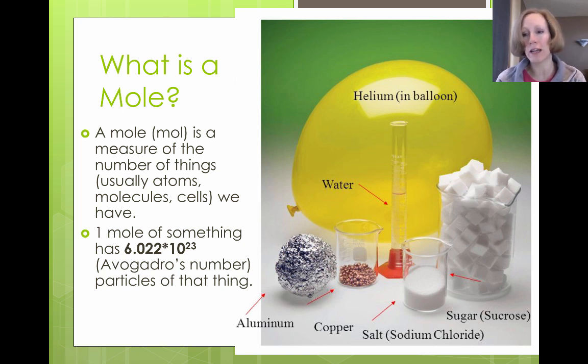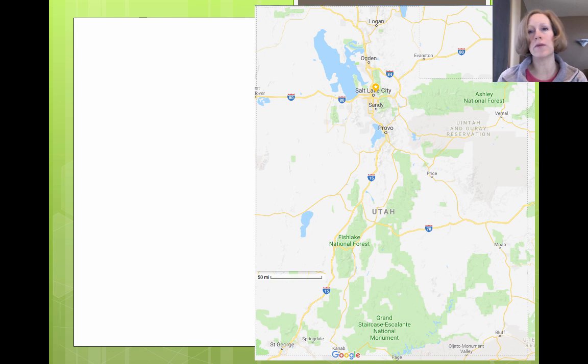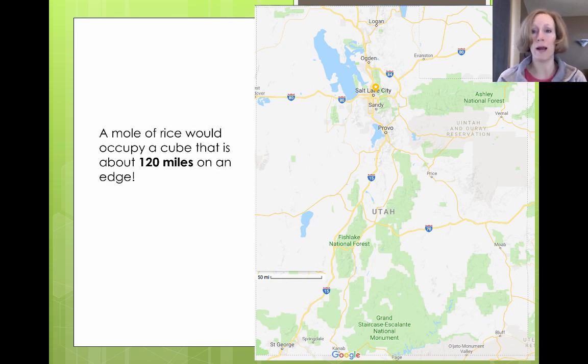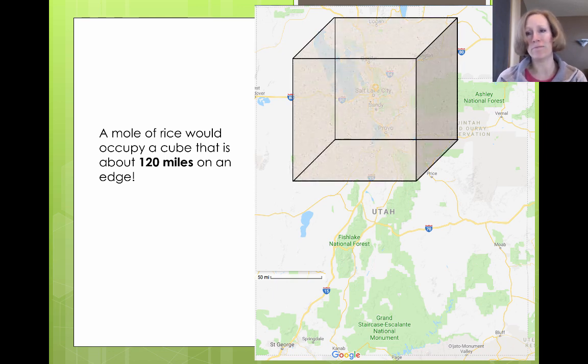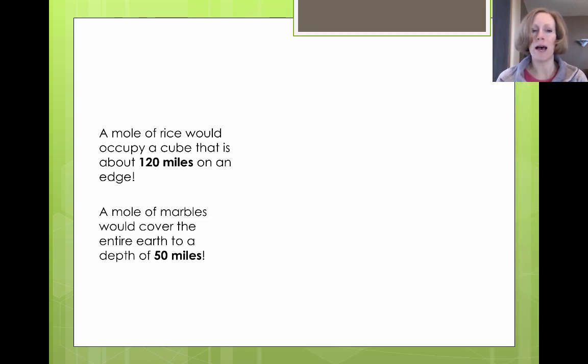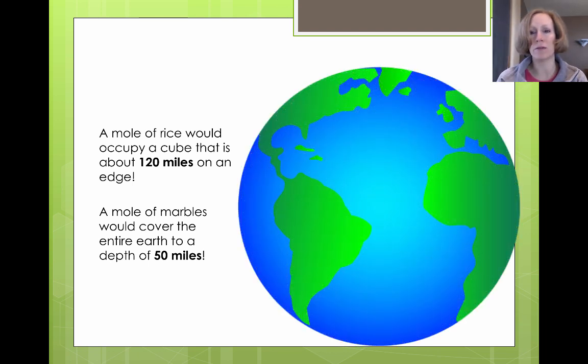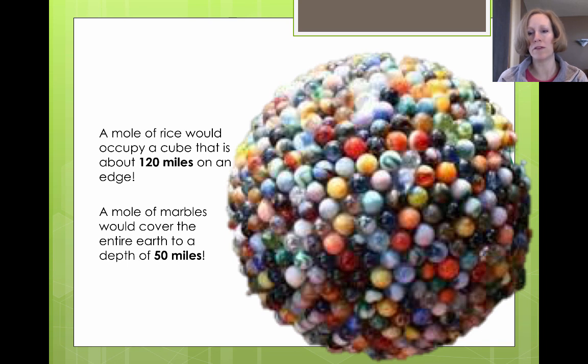Now that doesn't sound like much and it doesn't look like a whole lot when we look at it in substances, and that's because we're counting molecules or atoms. But let's understand how big this number really is. For example, if we were to look at a map of Utah, a mole of rice particles would occupy a cube that's about 120 miles on an edge and that would cover about that much of the area on the map. But also if we were to have a mole of marbles, it would cover the entire surface of the earth to a depth of 50 miles. So the whole earth would be covered to a depth of 50 miles if we had a mole of marbles. So it is a really, really big number.